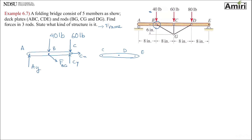Now this is interesting. Point C — I have to draw CX and CY opposite in direction on the other member. What should I do with that 60 pounds? Should I put it here again because that 60 pounds is on point C? The answer is no, because when you put these two members back together, CX cancels CX, CY cancels CY, and the result is 60 pounds — that's what I have. If I put another 60 pounds on the right free body diagram, when I put them back together I'll have 120 pounds of force.